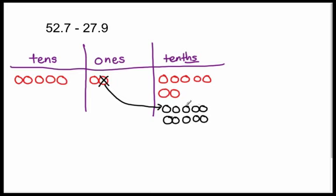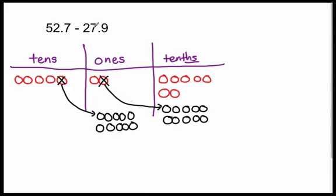So now from this, could I subtract nine tenths? Yes, I could — I have nine or more tenths. Let's go on to the next place. Could I subtract seven ones? Let's go to the ones place. I only have one one now. I don't have seven or more ones. So therefore, I am going to have to unbundle — take apart a ten into its ten smaller units, which are ten ones. Now, could I subtract seven ones from this number? Yes, I have seven or more ones. I'm trying to subtract two tens. Do I have two or more tens that are still bundled? Yes, I do. So therefore, I can complete my subtraction.